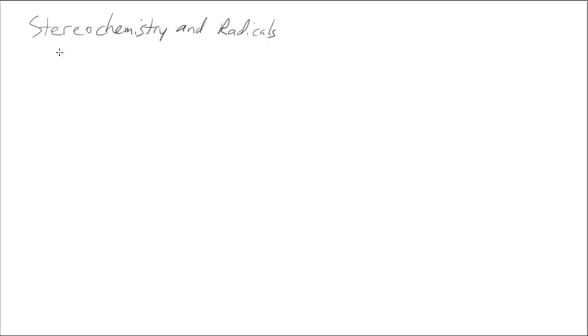How do we deal with stereochemistry and radicals? There's two different possibilities to look at. One is if we have an achiral starting material and the second is of course going to be if we have a chiral starting material. So let's start with first if we have an achiral starting material.